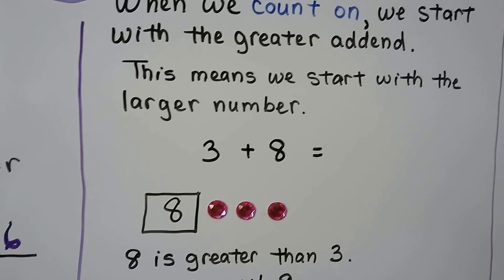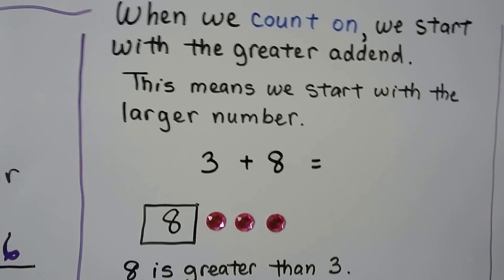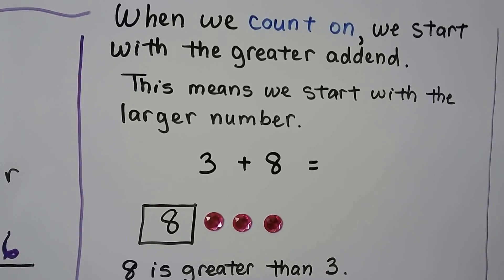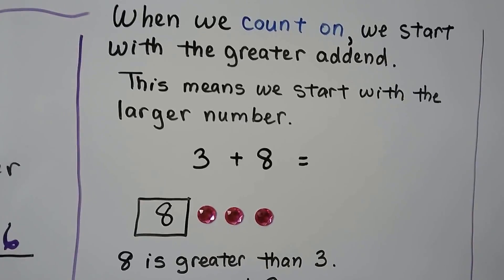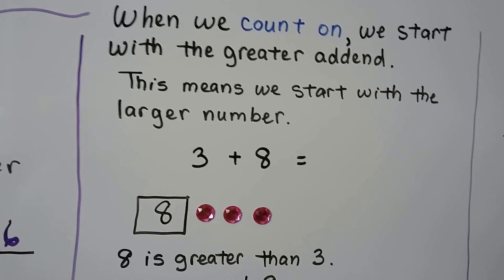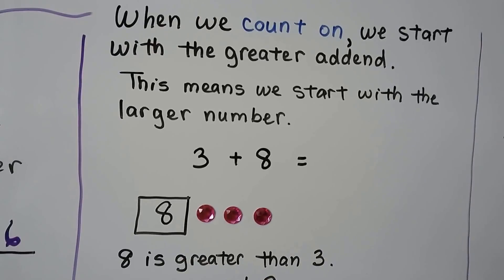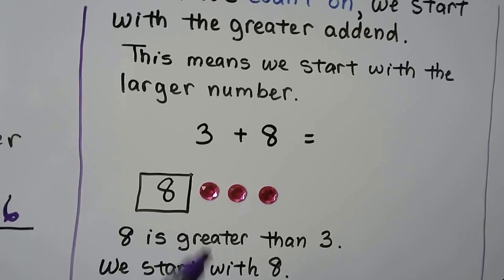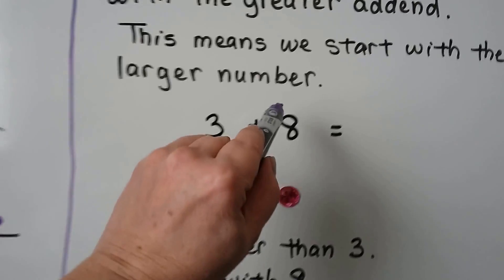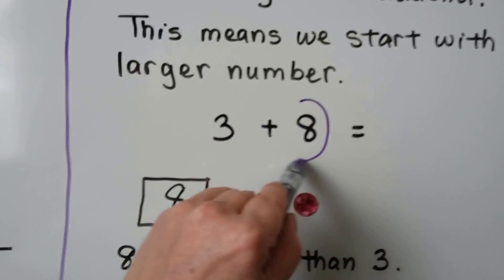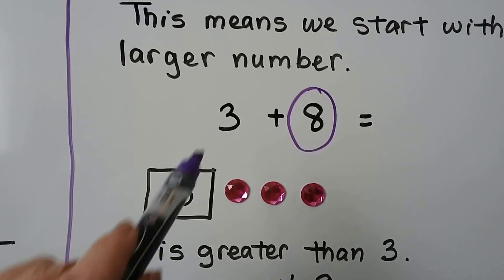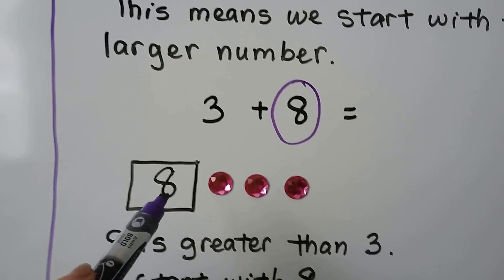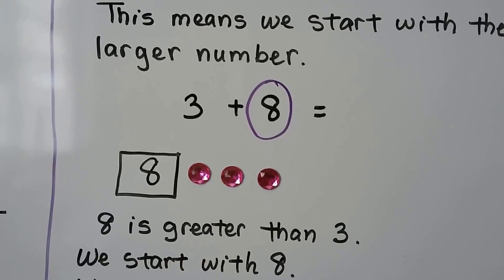When we count on, we start with the greater addend — the larger number. If we see 3 plus 8, we start with the greater number, the 8. Then we count on the 3: 8, 9, 10, 11.